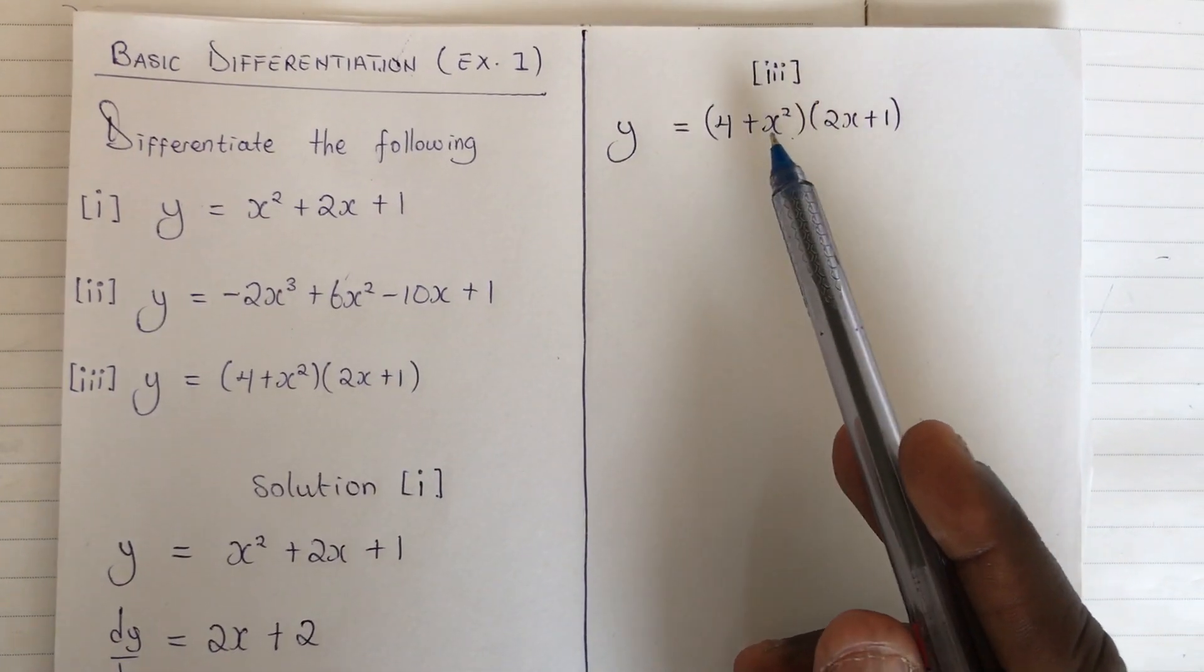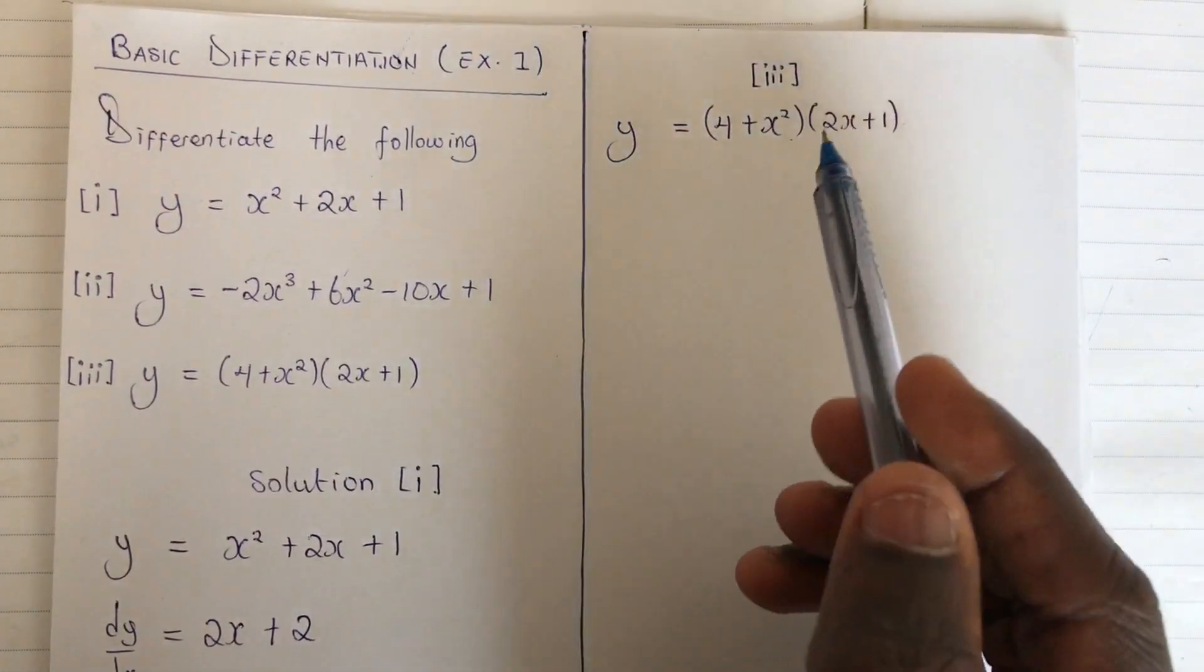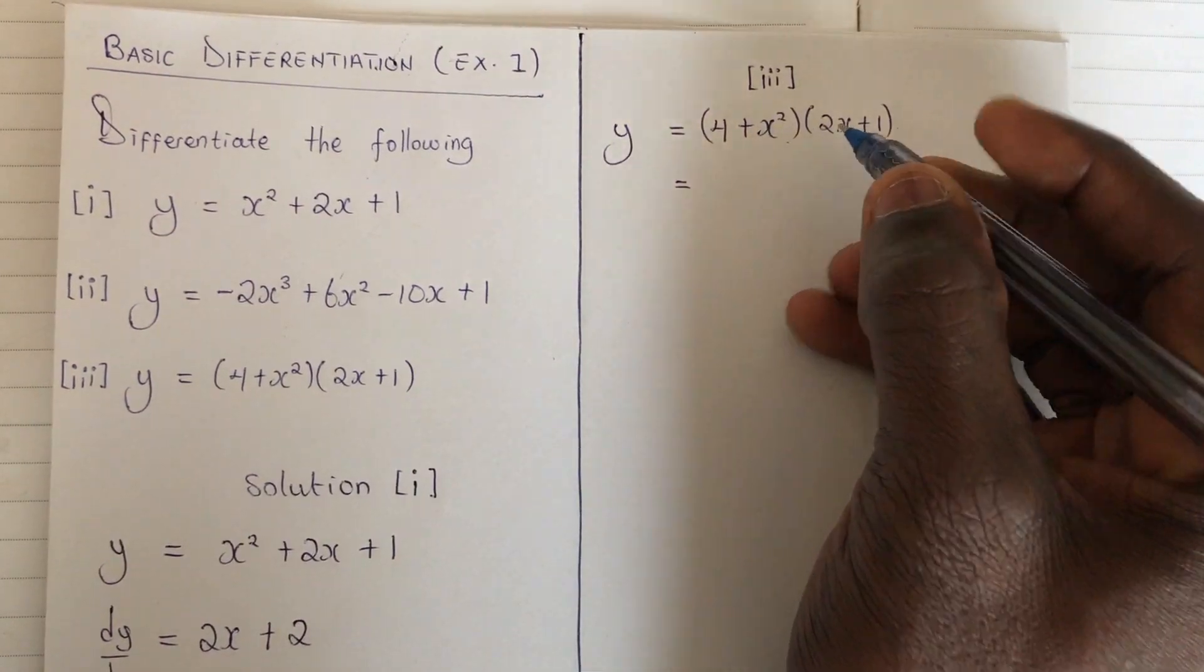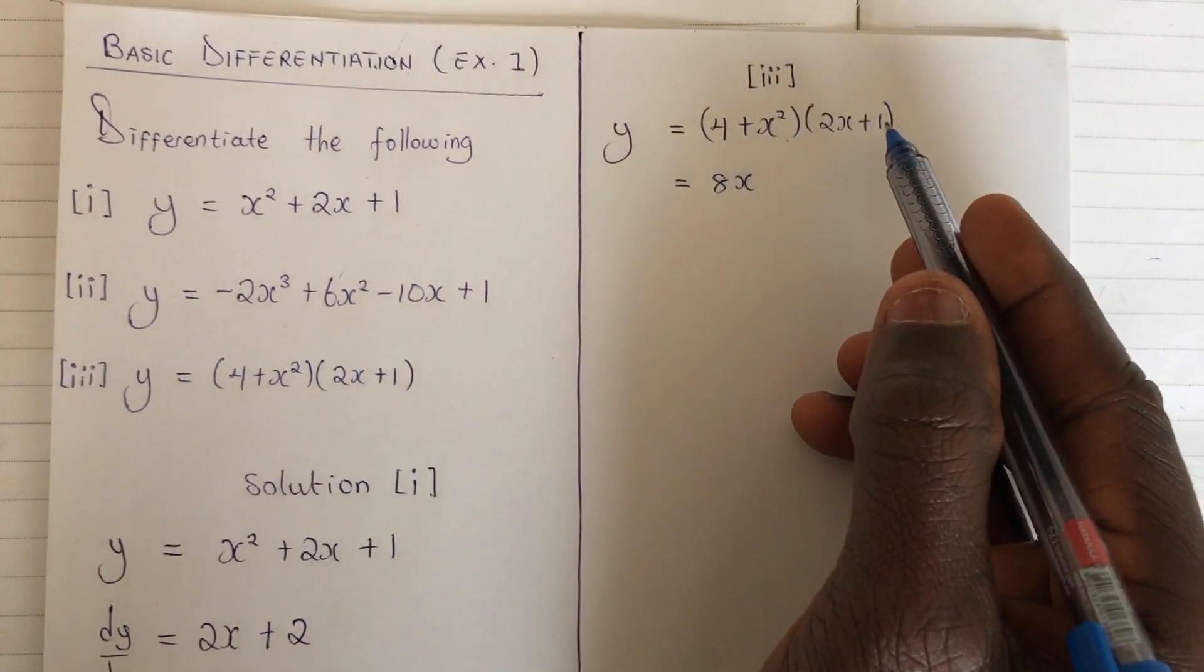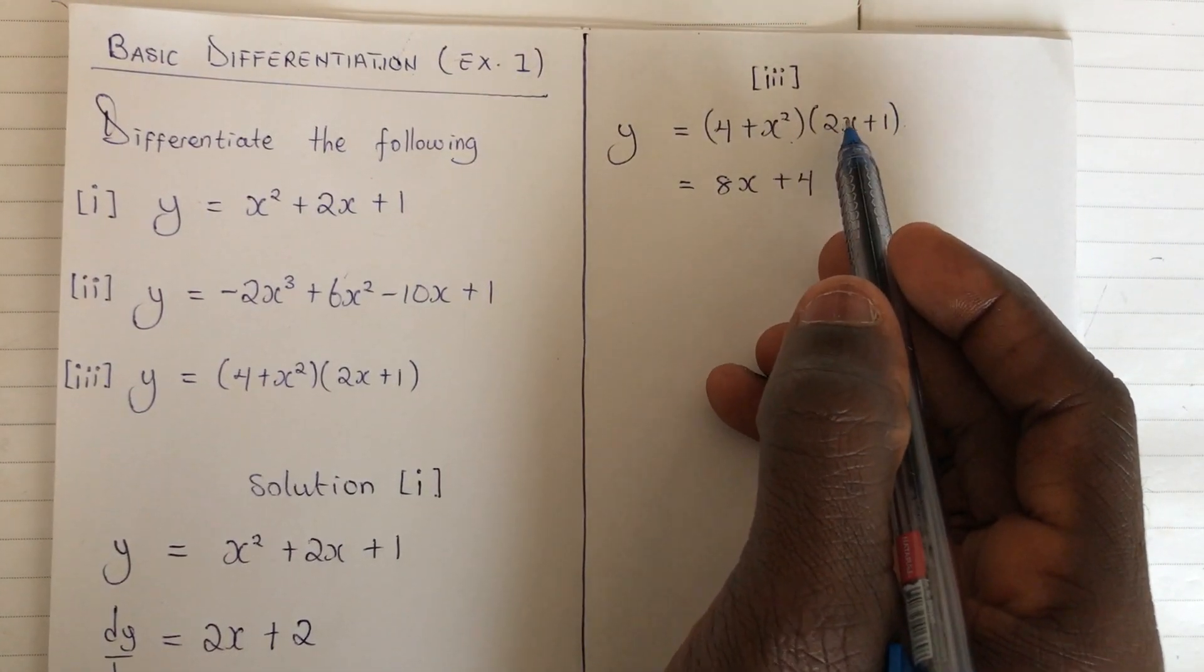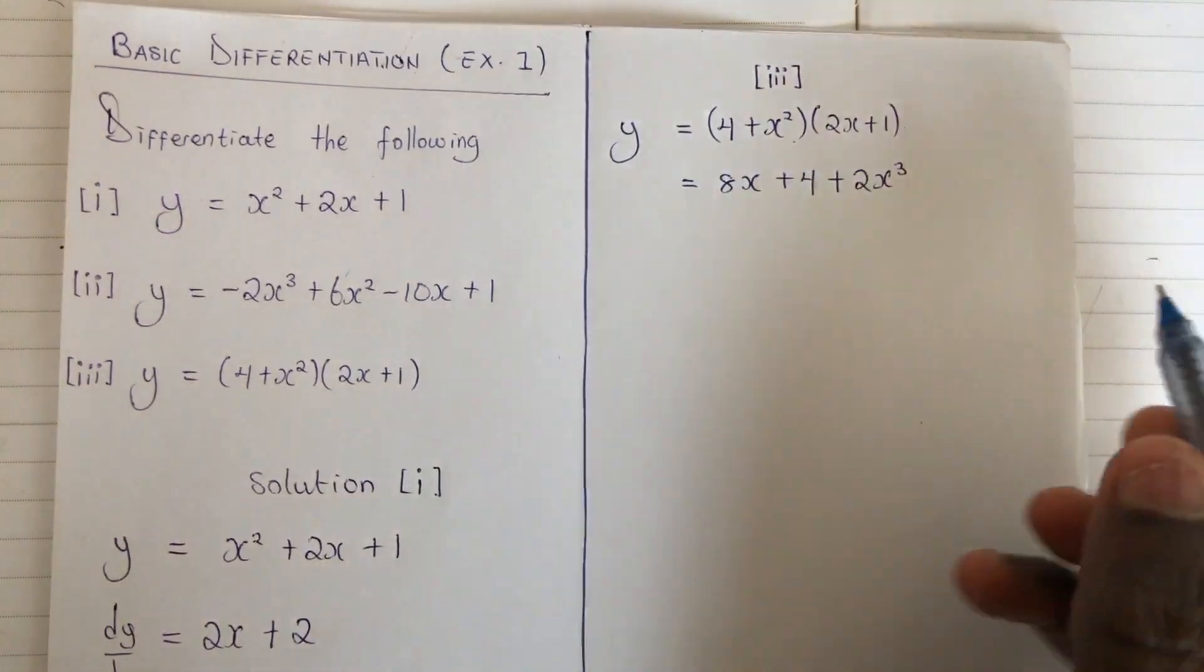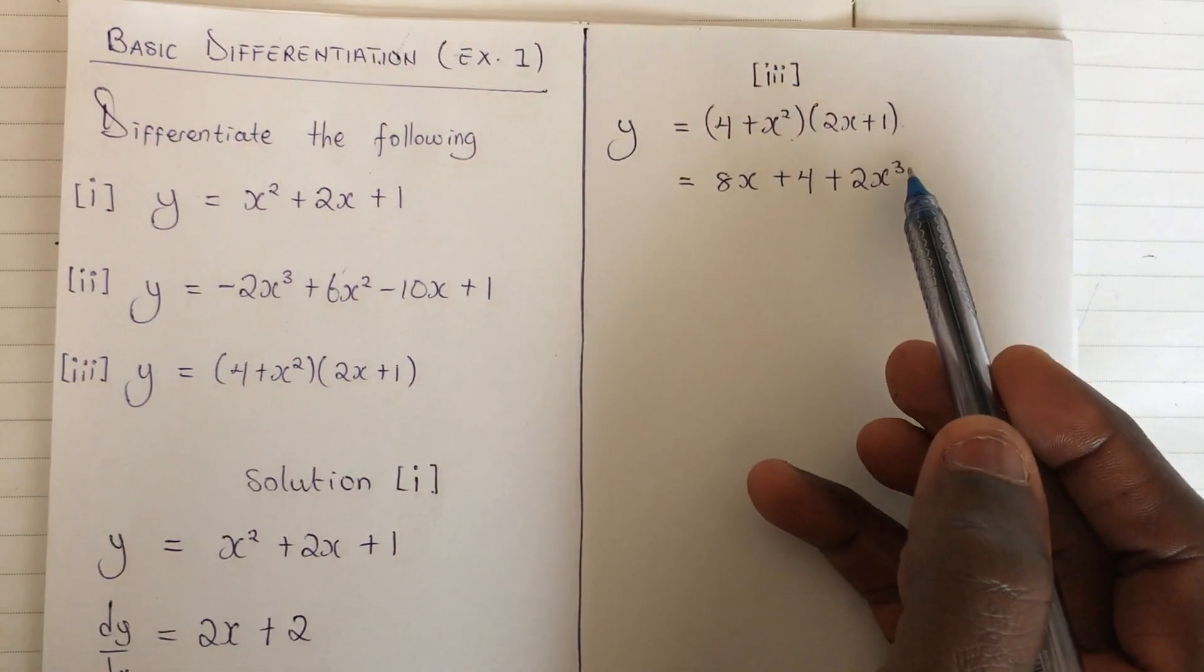So let me just expand this one. Use 4 to multiply everything here. When you are done, use x squared to also multiply. So this is giving us 4 times this, we are having 8x. 4 times 1, we are having plus 4. Then x squared times 2x, we are having plus 2x raised to the power 3. Remember that the power here is 1, so when you multiply, 1 plus 2 will give you 3.